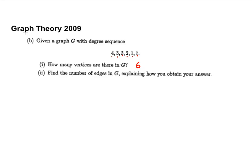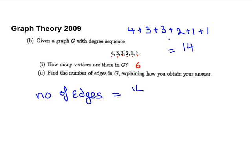First off, essentially what we are going to do is sum up the degree sequence: 4 plus 3 plus 3 plus 2 plus 1 plus 1, that is equal to 14. So the sum of the degree sequence divided by 2, the number of edges is 14 divided by 2, that is equal to 7. So there are 7 edges in all.